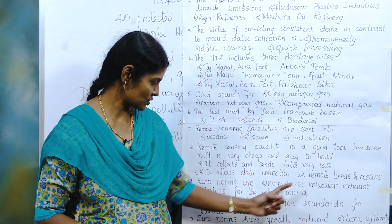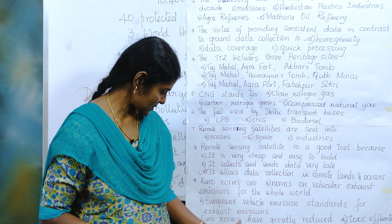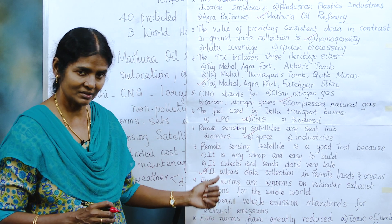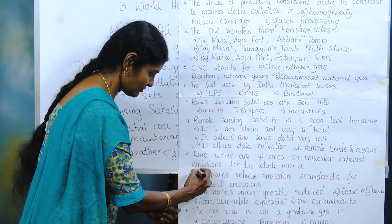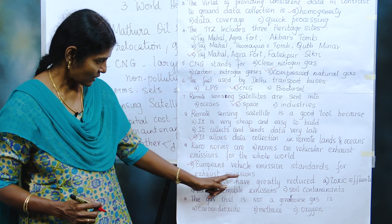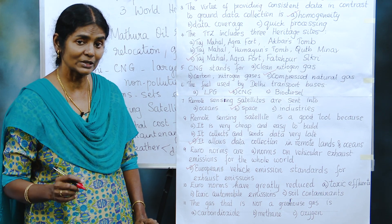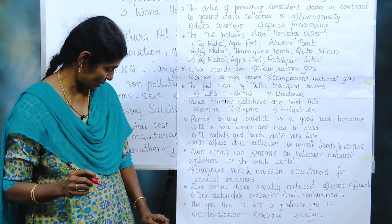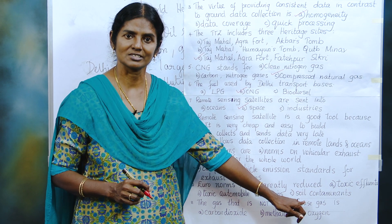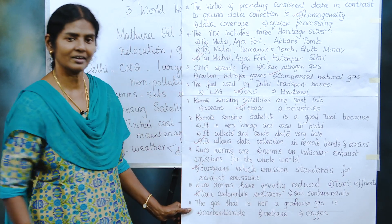Euro norms: are they norms for vehicular exhaust emissions for the whole world, or European vehicle emission standards for exhaust emissions? From the word 'Euro,' you get the clue that the second option refers only to European vehicle emission standards. Euro norms have greatly reduced — what have they reduced? Toxic effluents are liquid pollutants. Soil contaminants are in the land. Euro norms reduce toxic automobile emissions — that is why these norms are set up.